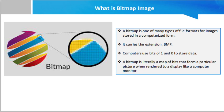Photographs saved in the bitmap format that need to be reduced for internet use can be converted to the JPEG format. While this is a lossy compression format, it is capable of displaying more than 256 colors and does a better job of rendering photographs.